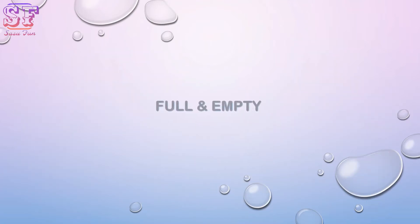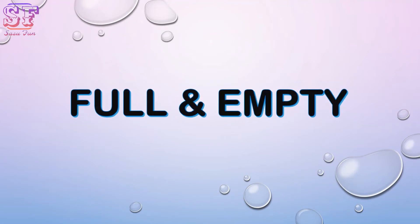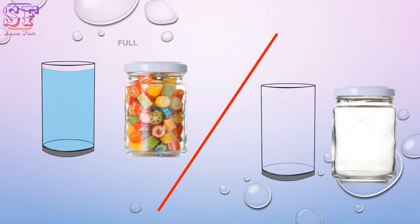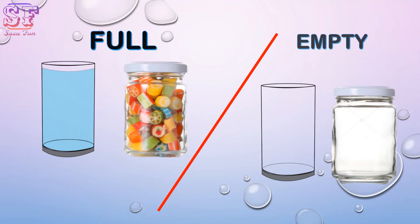Our sixth concept is full and empty. Full — we are full. Empty — we are empty. One side, glass and jar are full; another side, glass and jar are empty.